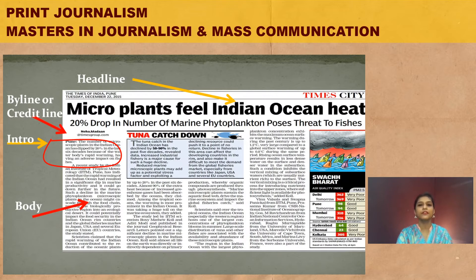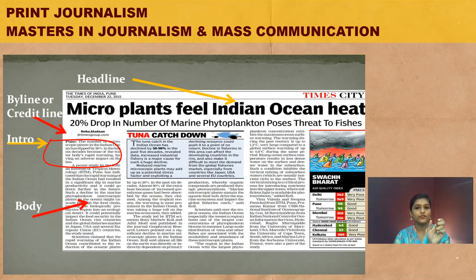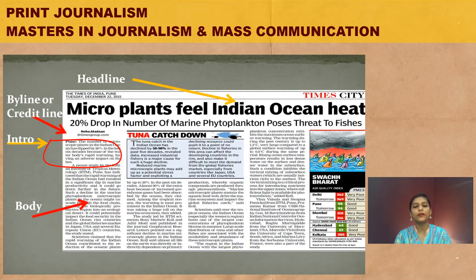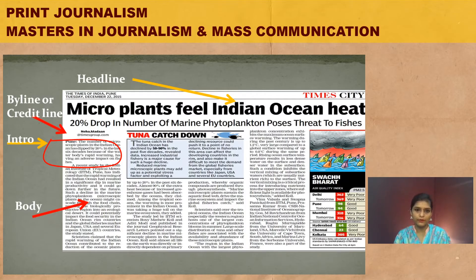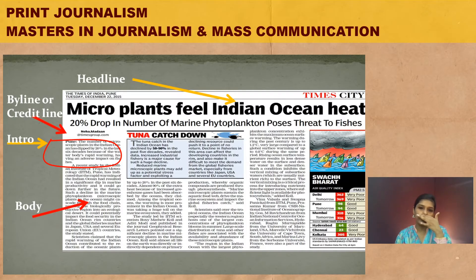Looking at a particular news report, you can see the headline at the top. The byline or credit line shows the name of the journalist — for example, the reporter is written as Neha Madan. At the place of a reporter's name, it can also say 'Times News Network' if the report was not written by a single reporter but is a collaborative effort of three or four reporters, or if that particular reporter has not done much in compiling that particular news story.